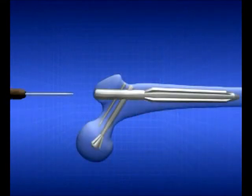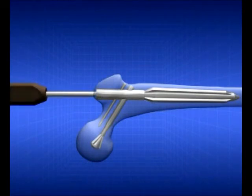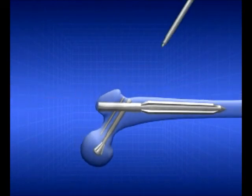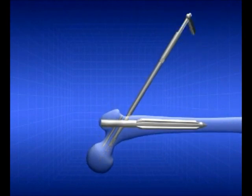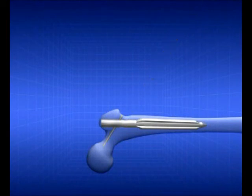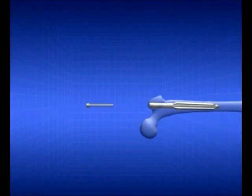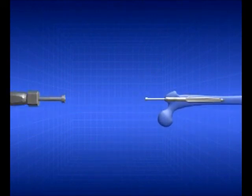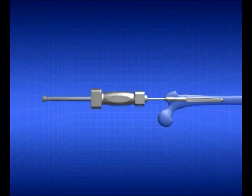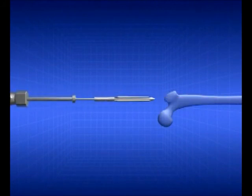In case removal of the nail and peg is required, the nail cap is removed using a screwdriver and peg unlocking is performed. The peg is then removed by rotating the peg removal handle, followed by the removal of the hip pin. The nail is removed utilizing the removal adapter and the slide hammer.